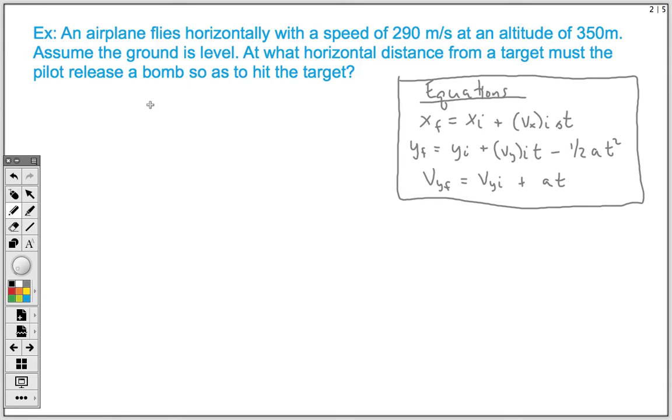Here we have our problem. It says an airplane flies horizontally with a speed of 290 meters per second at an altitude of 350 meters. Assume the ground is level. And here's the question: At what horizontal distance from a target must the pilot release a bomb so as to hit the target?